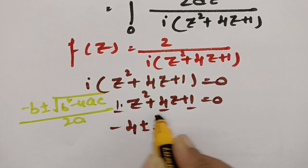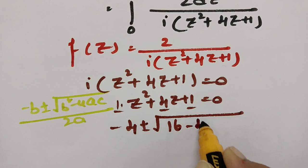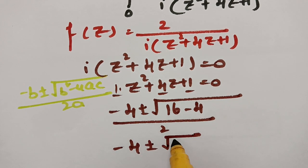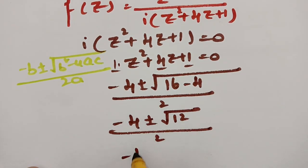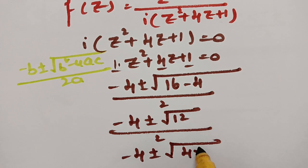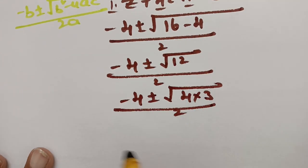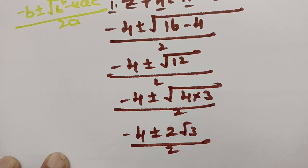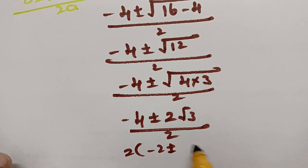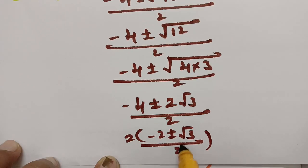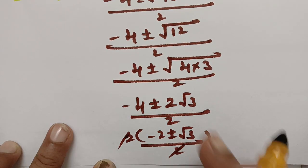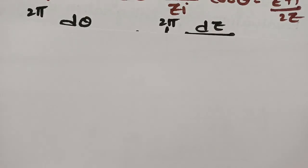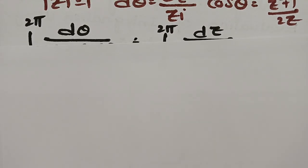Substituting: z = (−4 ± √(16−4)) / 2 = (−4 ± √12) / 2 = (−4 ± 2√3) / 2. Taking 2 as a common factor gives (−2 ± √3) / 1, so the two pole values are −2 + √3 and −2 − √3.